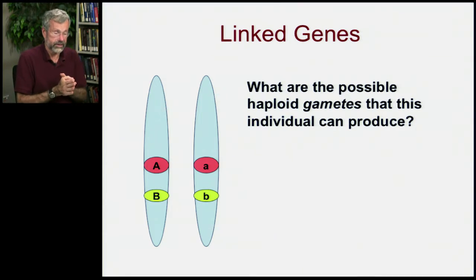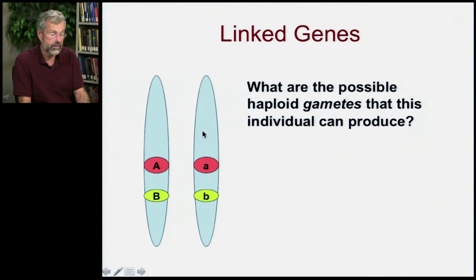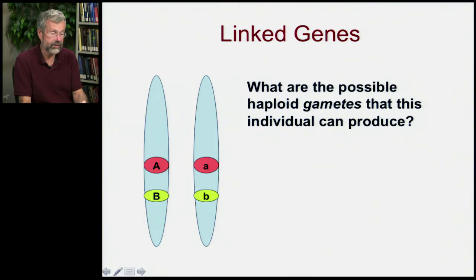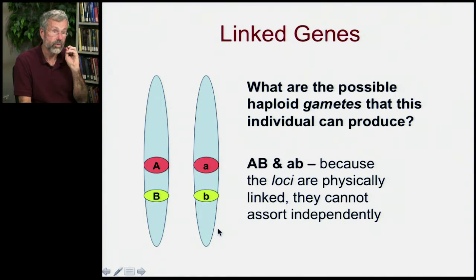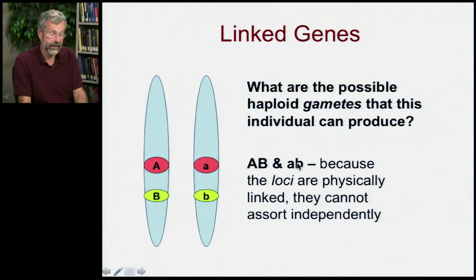Now let's look at this. If we have two different traits on the same chromosome, you have the homologous partners lining up at meiosis. This chromosome is going to end up in one gamete and this chromosome is going to end up in a different gamete. So if this whole chromosome gets passed on intact, the capital A allele is on the same chromosome as the capital B allele, and the little a is with the little b. So we would only be able to produce gametes that had capital A and B together, or little a and little b together. Because the loci are physically linked, they cannot assort independently.